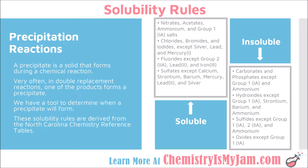A precipitation reaction is one that forms a precipitate, and a precipitate is a solid that forms during a chemical reaction. Very often in a double replacement reaction, one of the products is not soluble in water, so it forms a solid and comes out of solution. We have a tool to help us determine when a precipitate will form, and that tool is the solubility rules.